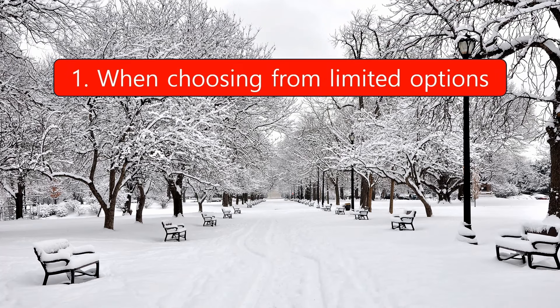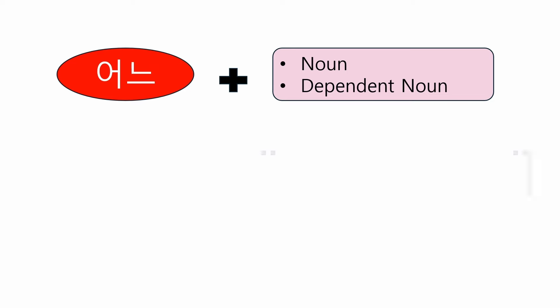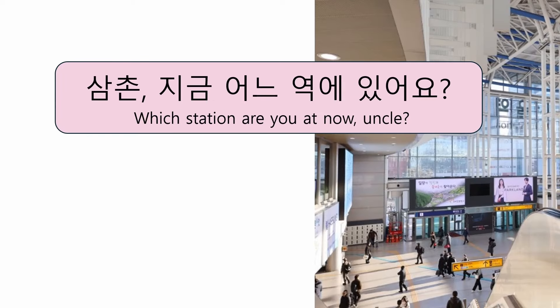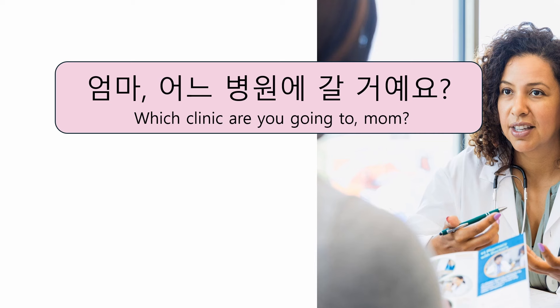First: when choosing from limited options. 어느 is used when asking someone to choose from limited options, so it corresponds to 'which' in English. For example, if there are two train stations in the city, you can call and ask your uncle who visited you. If there are two clinics in front of your house, you can ask like this — which clinic are you going to, mom?